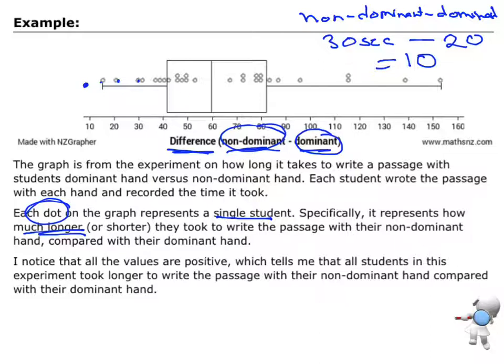Now I need to notice any patterns that I see. So one thing I notice is that all of the values, so here's 10, there's 160, and 0 is just down here, all of the values on this graph are positive. All of those numbers are positive numbers. And so that connects with my arrow graph where all the arrows were going in one direction.